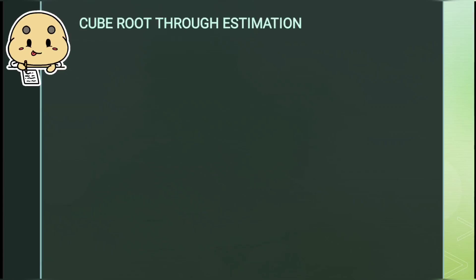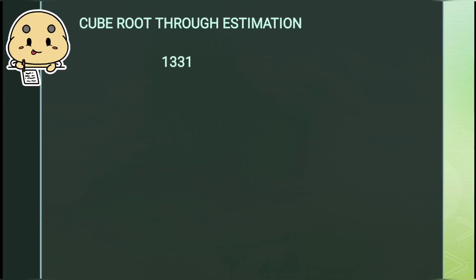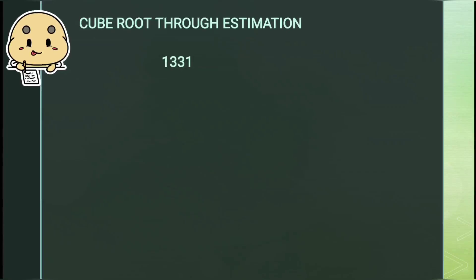So let's begin. Here we have a number 1331. It is a cube number. First of all we will start making groups of three digits starting from the right-most digit of the number.